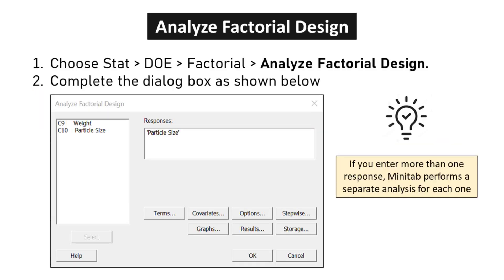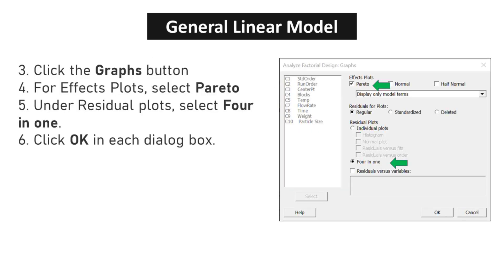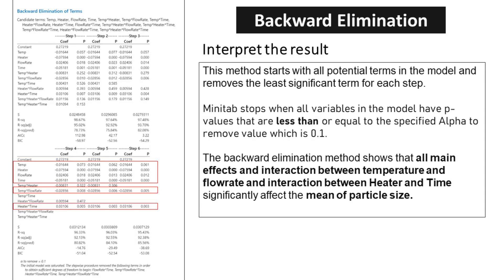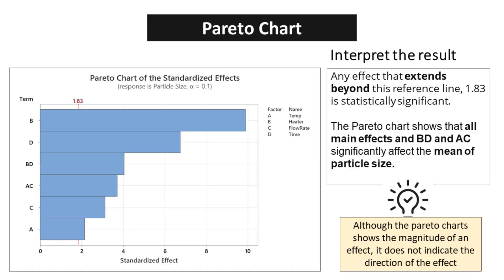For particle size analysis, choose STAT > DOE > Factorial > Analyze Factorial Design and complete the dialog box. Click the Graphs button; for Effects Plots select Pareto, and under Residual Plots select 4-in-1. Click OK. Click Stepwise, select Backward Elimination under Method, and select Include Details for each step. The Backward Elimination method shows that all main effects, the interaction between temperature and flow rate, and the interaction between heater and time significantly affect the mean particle size. Any effect beyond the reference line of 1.83 is statistically significant. The Pareto chart confirms that all main effects and interactions BD and AC significantly affect the mean particle size.